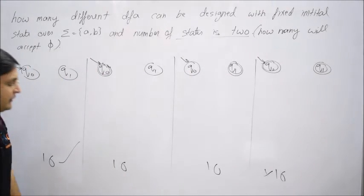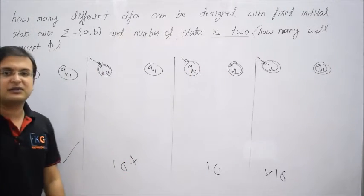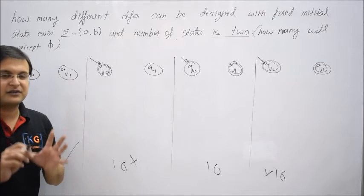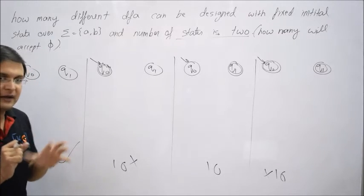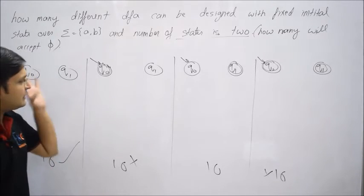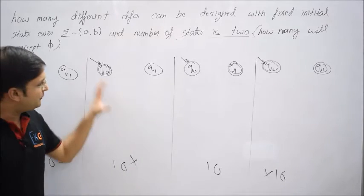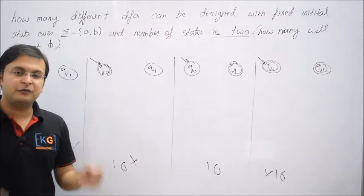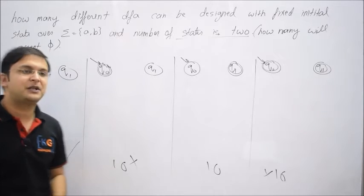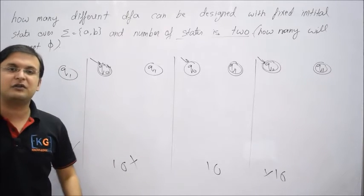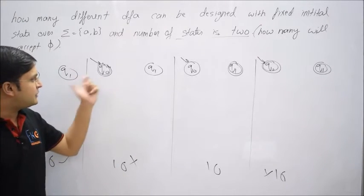Let me say I can eliminate these 16 cases also. Now it's very interesting, please try to concentrate. Why? Because here initial state is final state, so no matter what transition I take, one string is always going to be accepted which is the null string or empty string or epsilon.